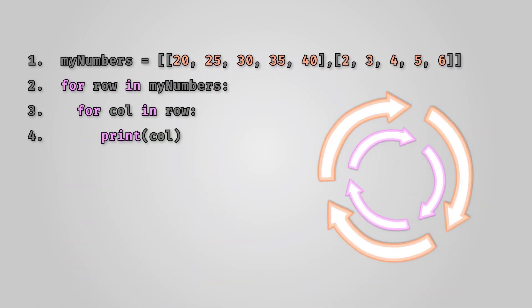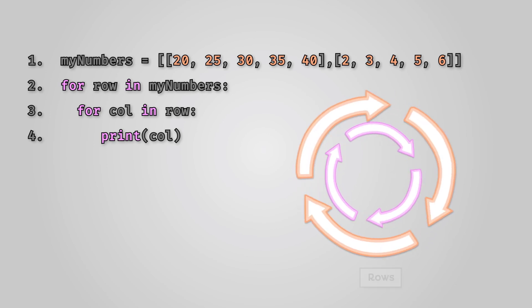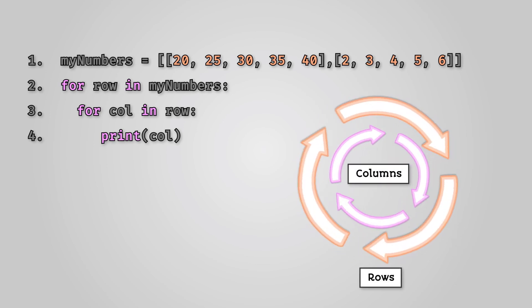Looping through a 2D array requires the use of a nested for loop. The outer loop deals with the rows. The inner loop deals with the columns.